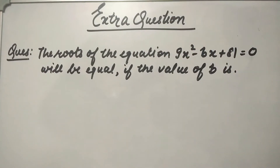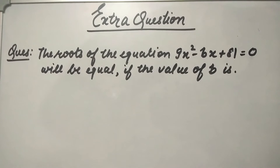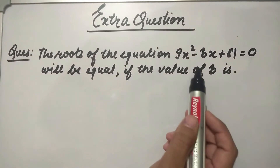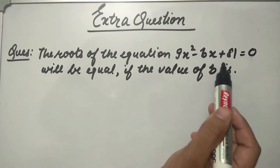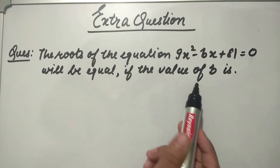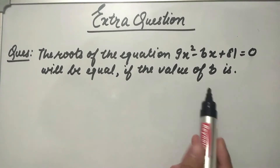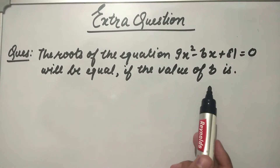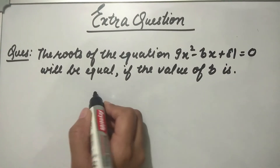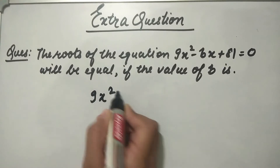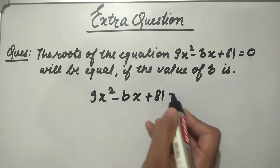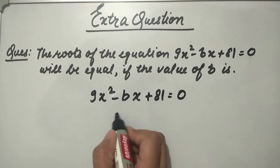Hello guys, welcome back to my channel Plus Minus Maths. Today's question: the roots of the equation 9x² - bx + 81 = 0 will be equal if the value of b is? So we need to find the value of b for which the roots of this equation are equal.